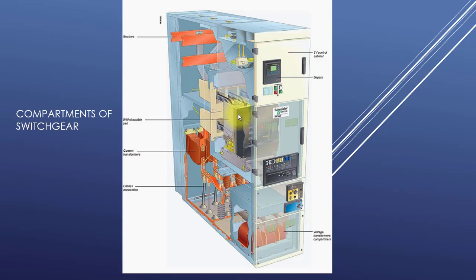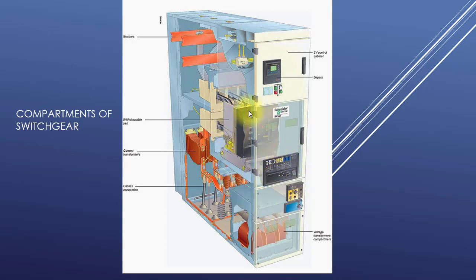Further, you can see the front door — this is the front door — and the circuit breaker trolley is racked in. So this compartment is the circuit breaker compartment. We have now identified three compartments.